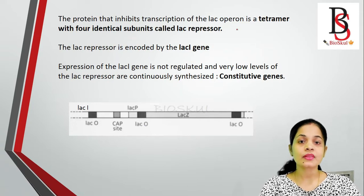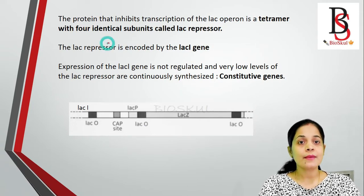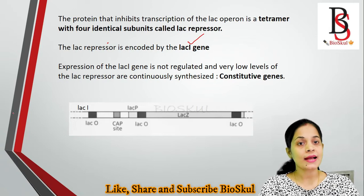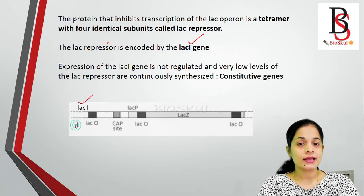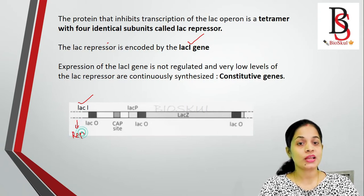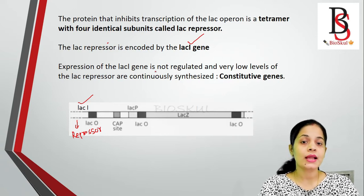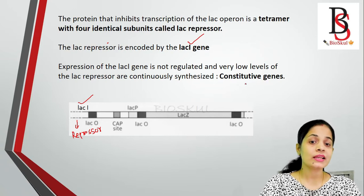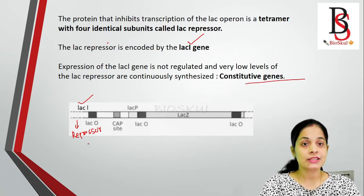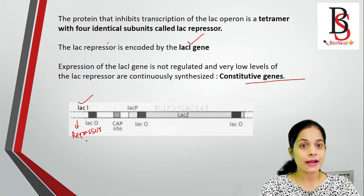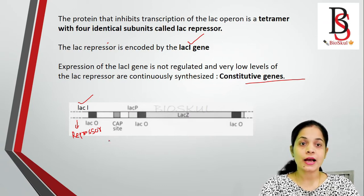The repressor protein is a trans-regulator protein encoded by a gene known as the lac I gene. The lac I gene produces the repressor protein, which negatively controls the lac operator. An important point is that lac I gene expression is not regulated — it is synthesized continuously, so we say lac I is a constitutive gene. This repressor prevents the binding of RNA polymerase to the promoter region because the promoter and the operator regions overlap with each other.